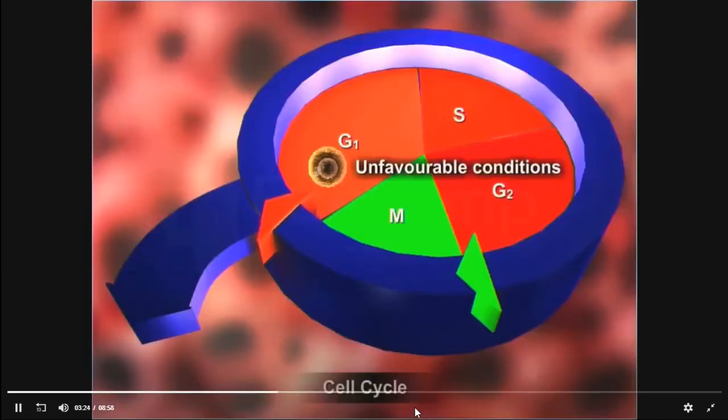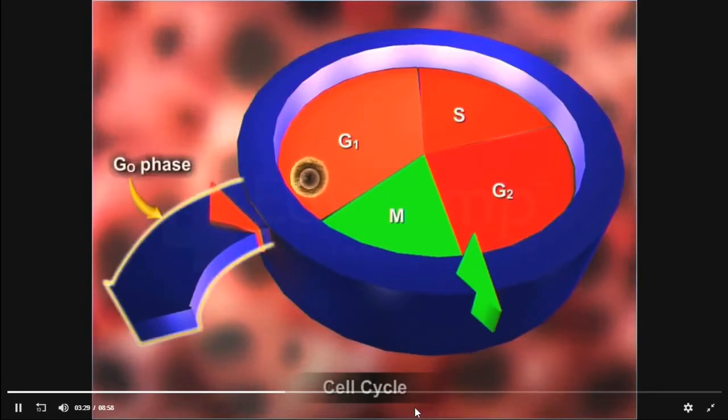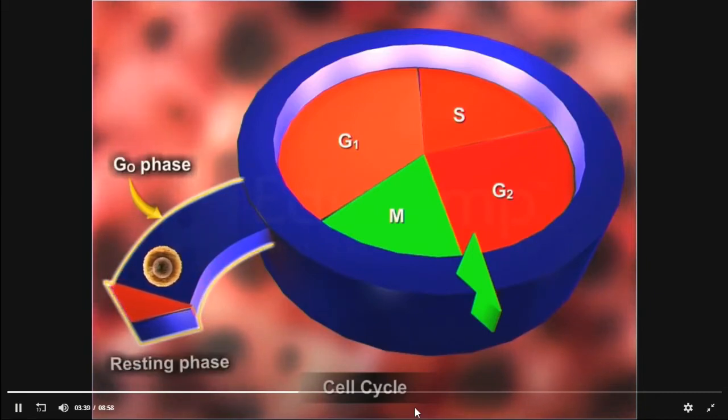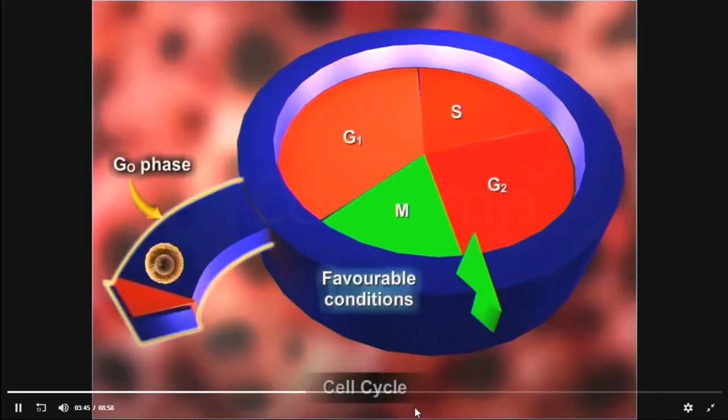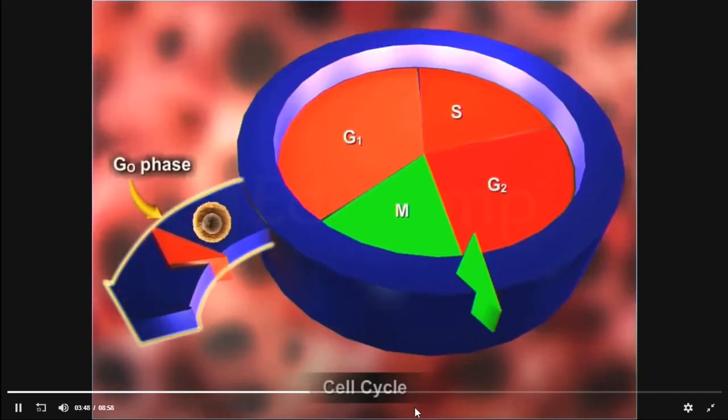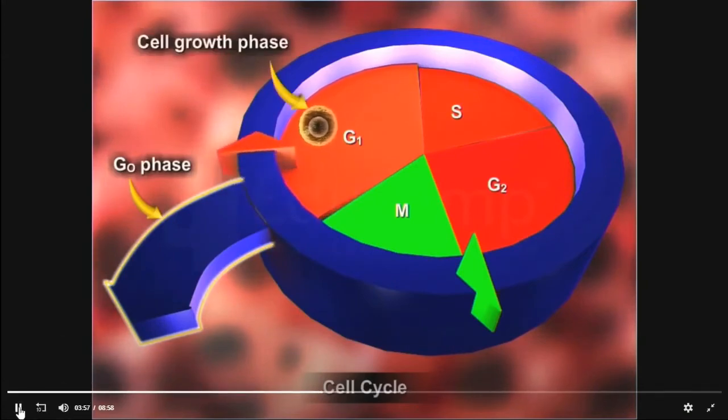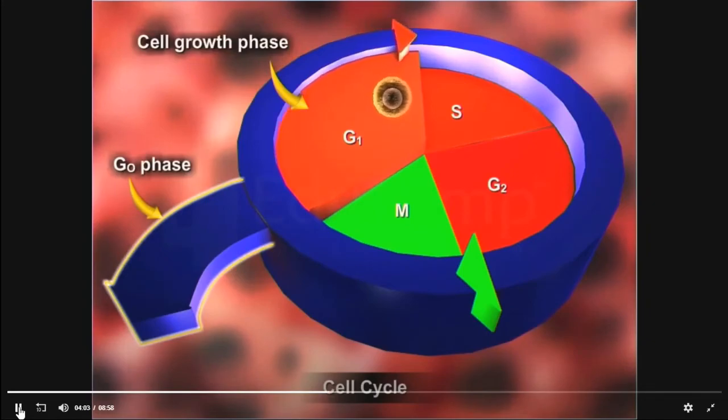However, if the conditions are unfavorable for cell division, the cell may enter a G0 phase which may last from a few hours to a lifetime. G0 is a resting phase during which a cell rests. When favorable conditions return, the cell re-enters the cell cycle and reaches the commitment point and gets committed to DNA replication. Once committed, a cell undergoes DNA replication even if favorable conditions are removed.